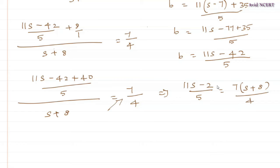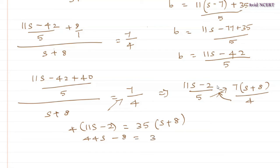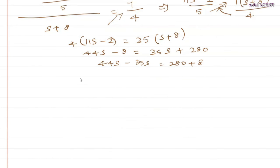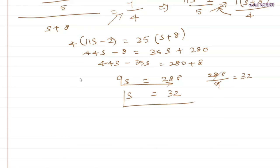This 5 goes down here, divided by 4. Cross multiplication gives: 4 times (11s minus 2) equals 35 times (s plus 8). Simplifying: 44s minus 8 equals 35s plus 280. Grouping s terms: 44s minus 35s equals 280 plus 8, so 9s equals 288. Therefore s equals 288 divided by 9, which is 32. So sister's age equals 32 years.